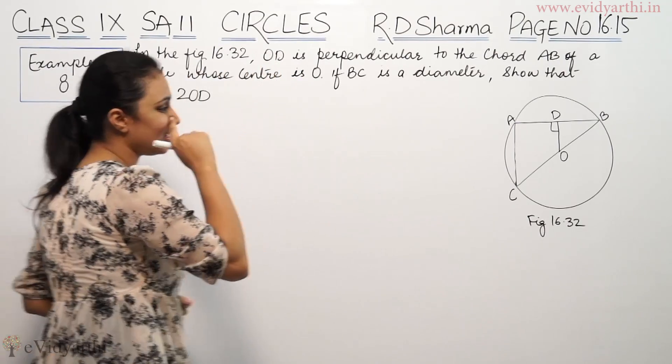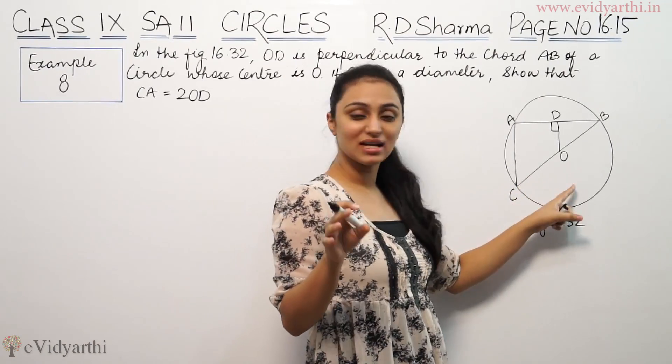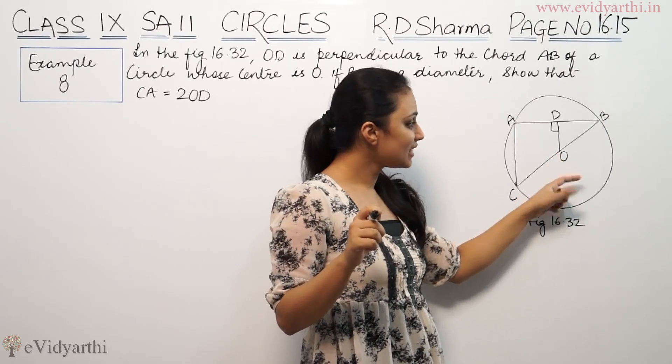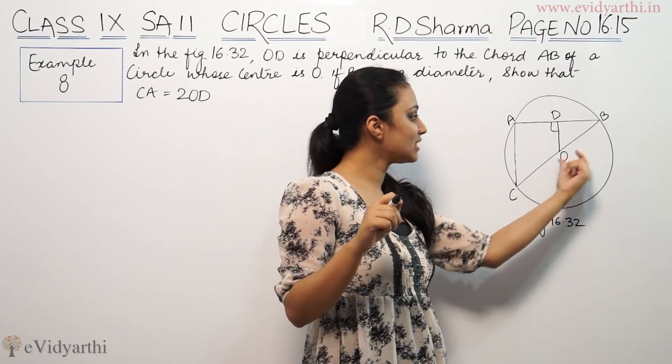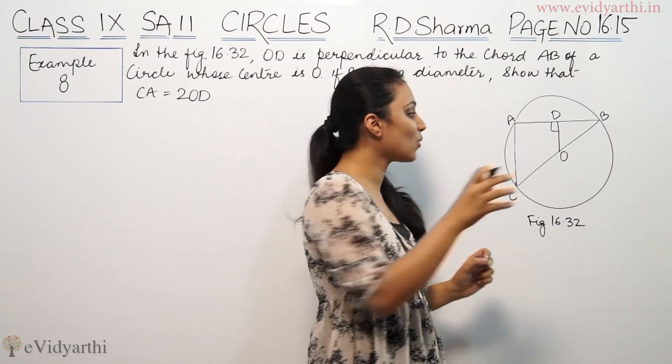Now we know that BC is the diameter, that means O is the center of circle. Since O is the center and BC is the diameter, that means OC will be equal to OB because both are radii.